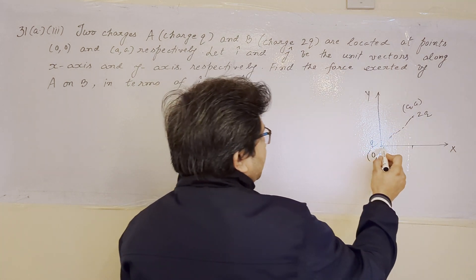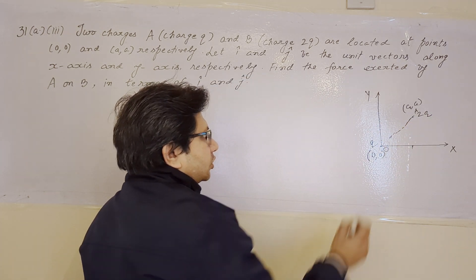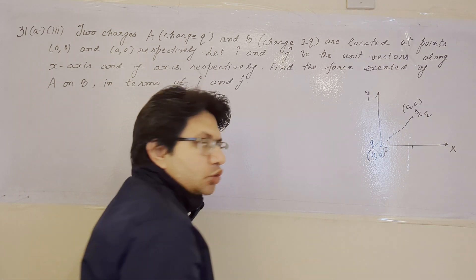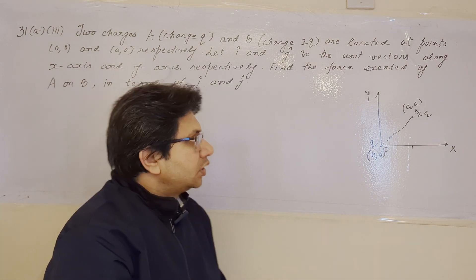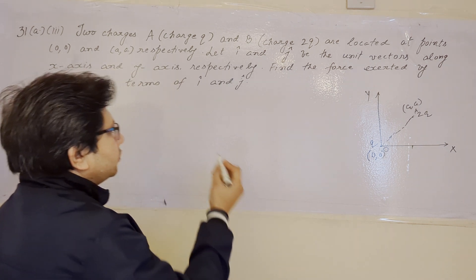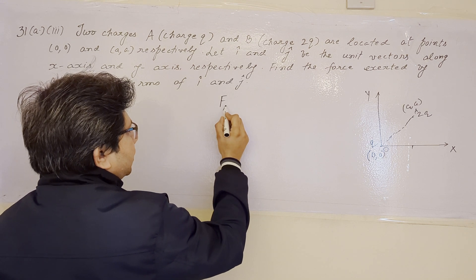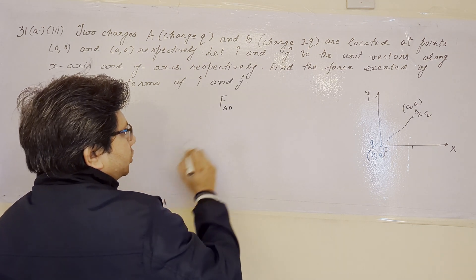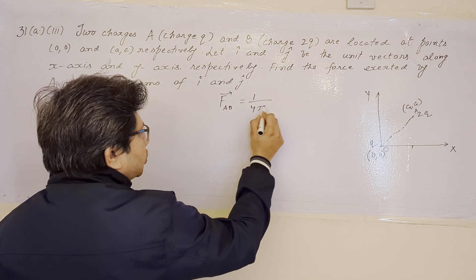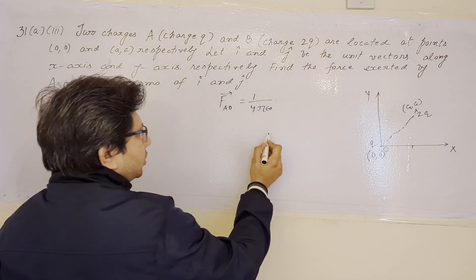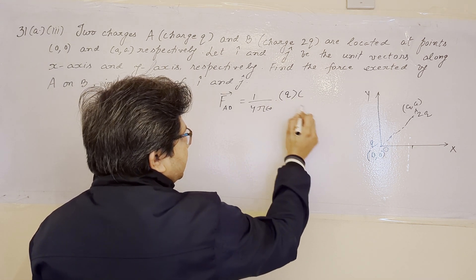Let the origin point be O and the point (a,a) be A. We have to find the force on the charge 2q placed at A. We use Coulomb's law in vector form. The force on charge at A due to the charge at O — that is F_AO — equals 1/(4πε₀) multiplied by the first charge q and the second charge.